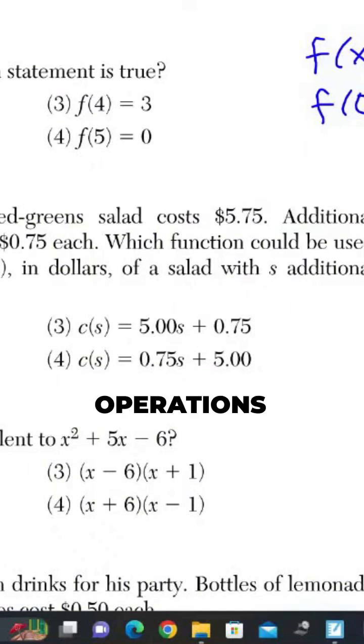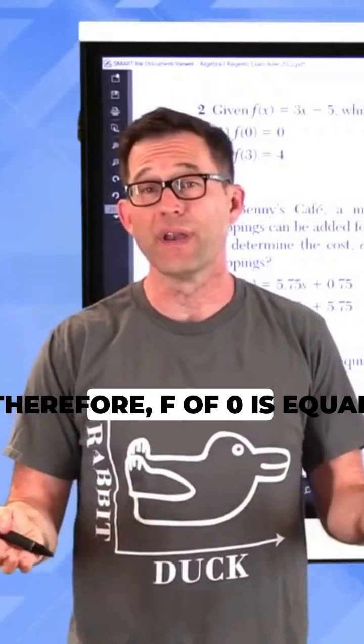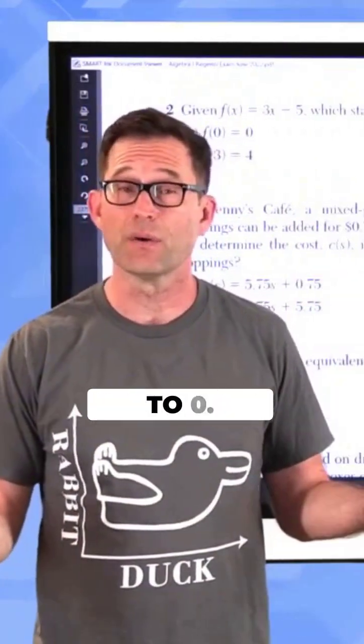Now I have to remember my order of operations, 3 times 0, 0. And then I do 0 minus 5 and I get negative 5, right? Well then, therefore, f of 0 is equal to negative 5. It's not equal to 0.